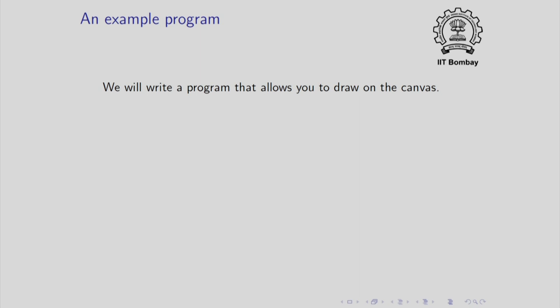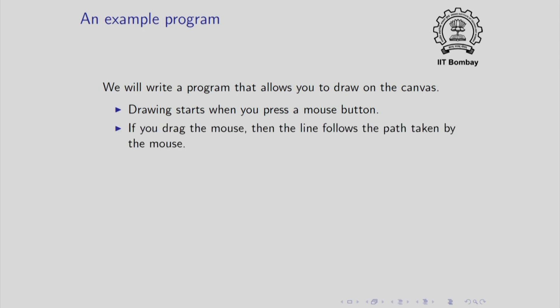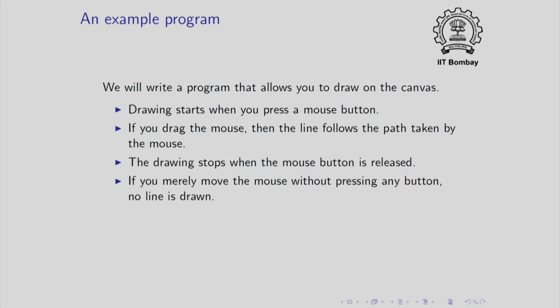Now I am going to show you an example program. This is a very simple program, but I will remark later how you can build upon it. We are going to write a program that allows you to draw on the canvas. You take your cursor to where you want to start drawing a line, press a mouse button, then drag the mouse along the path you want the line drawn. When you want to stop, you release the mouse button. You can then move to another position and draw another line. If you merely move the mouse without pressing a button, no line is drawn. To stop the program, you press the Escape key.